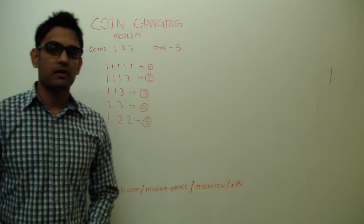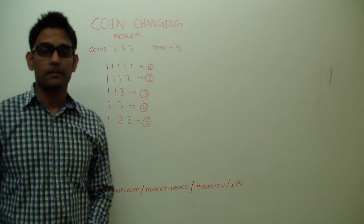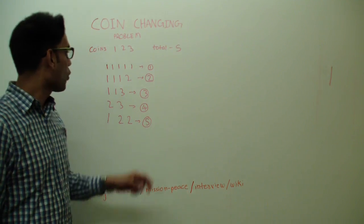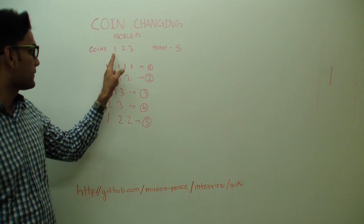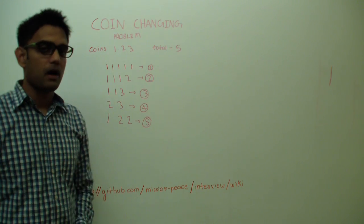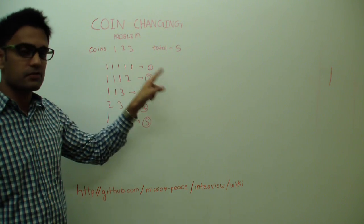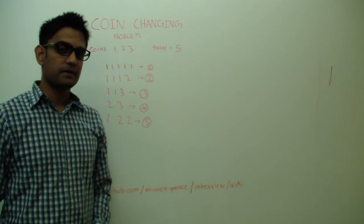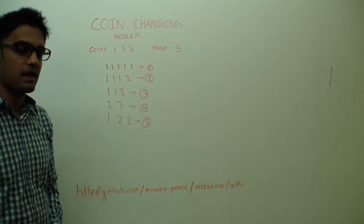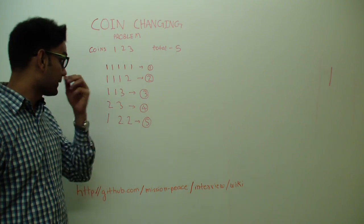Hello friends! My name is Tushar and today we are going to look at the coin changing problem. The question is: given coins of different denominations and a total, how many ways can these coins be combined to get this total? So if the denominations are 1, 2, and 3 and the total is 5, how many different ways can we get 5?